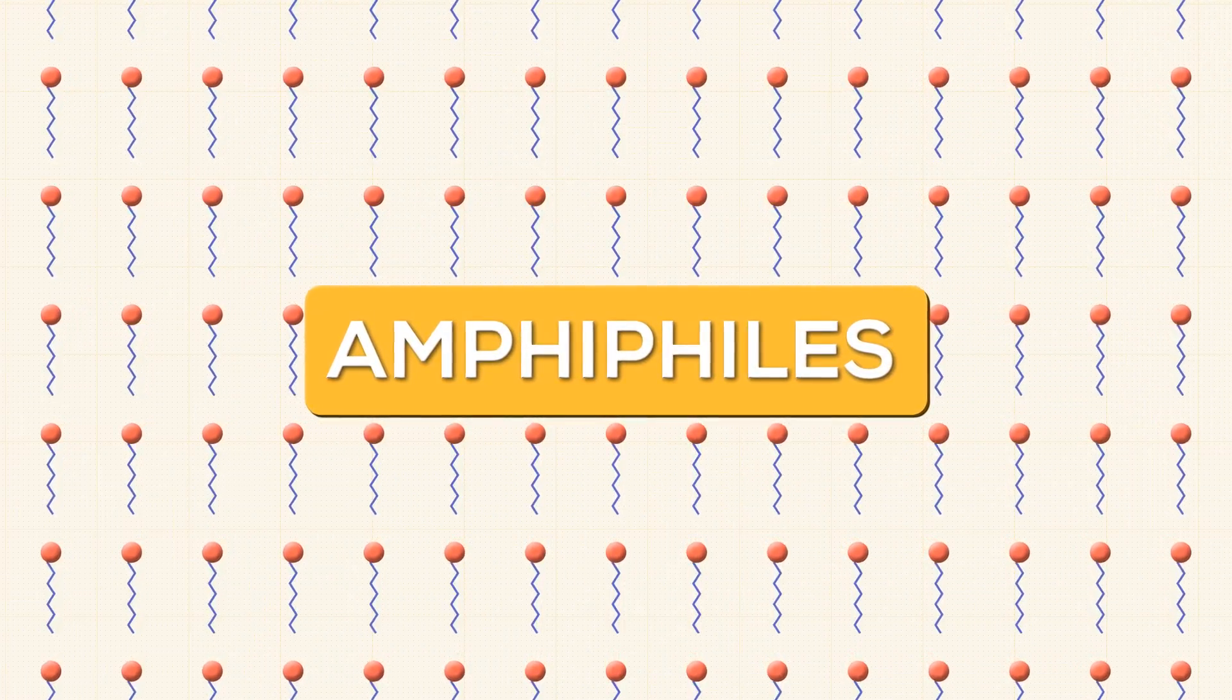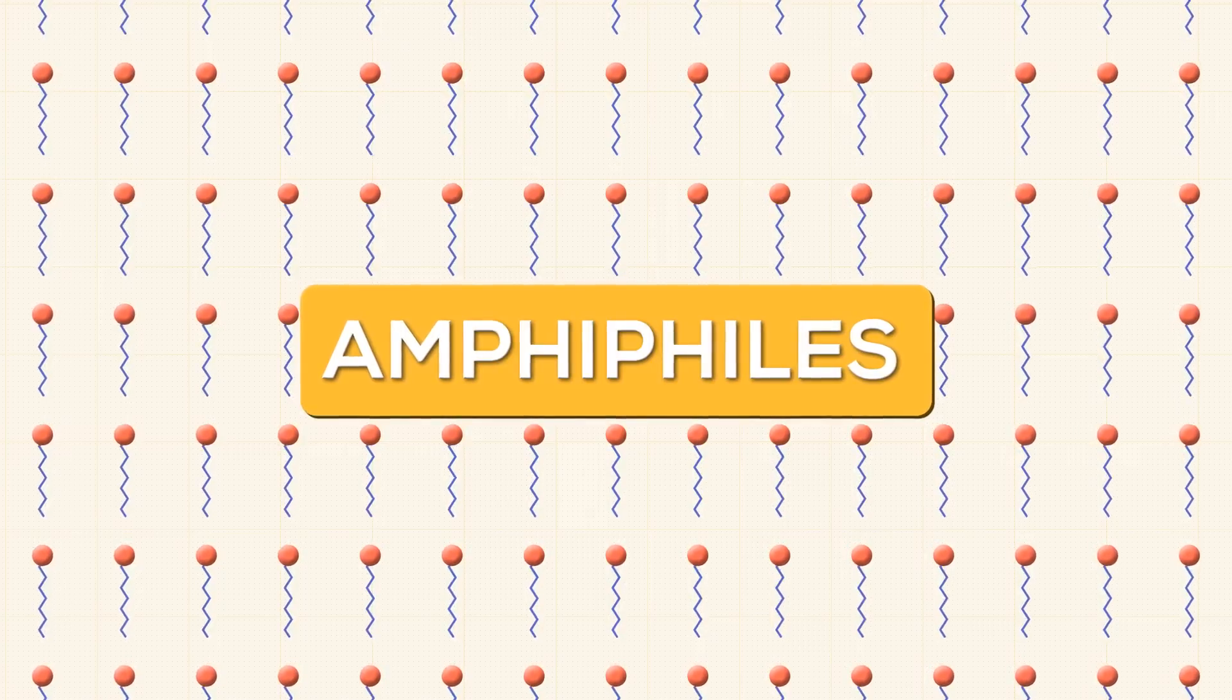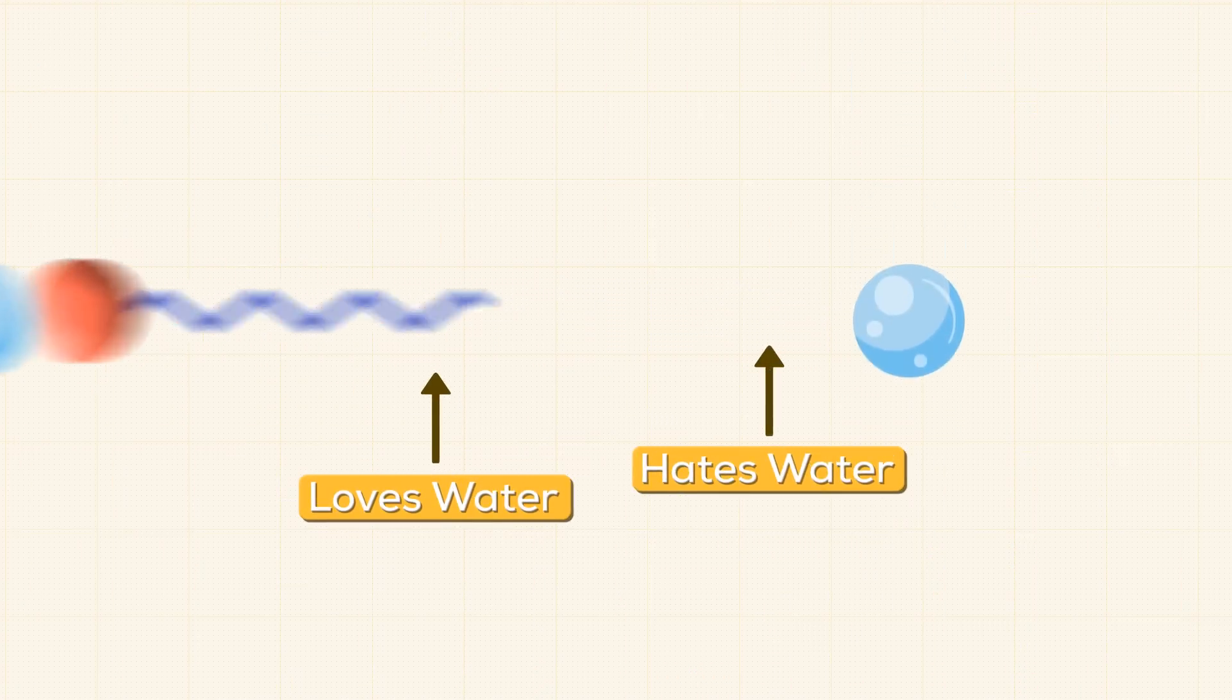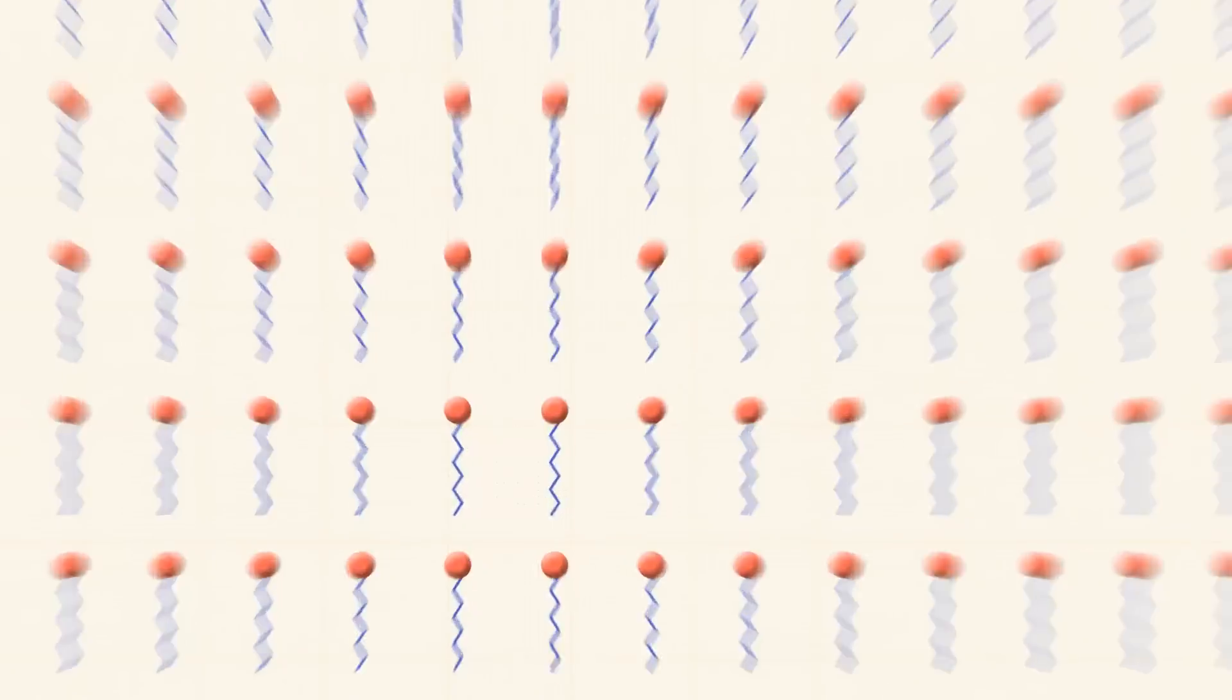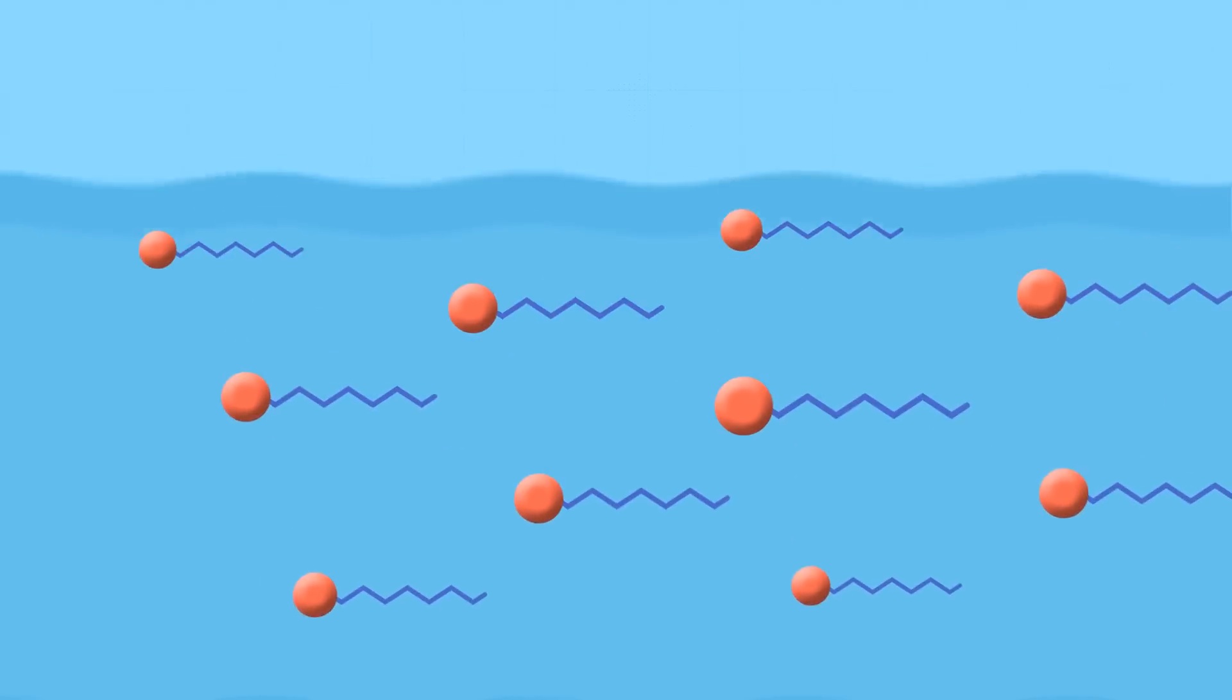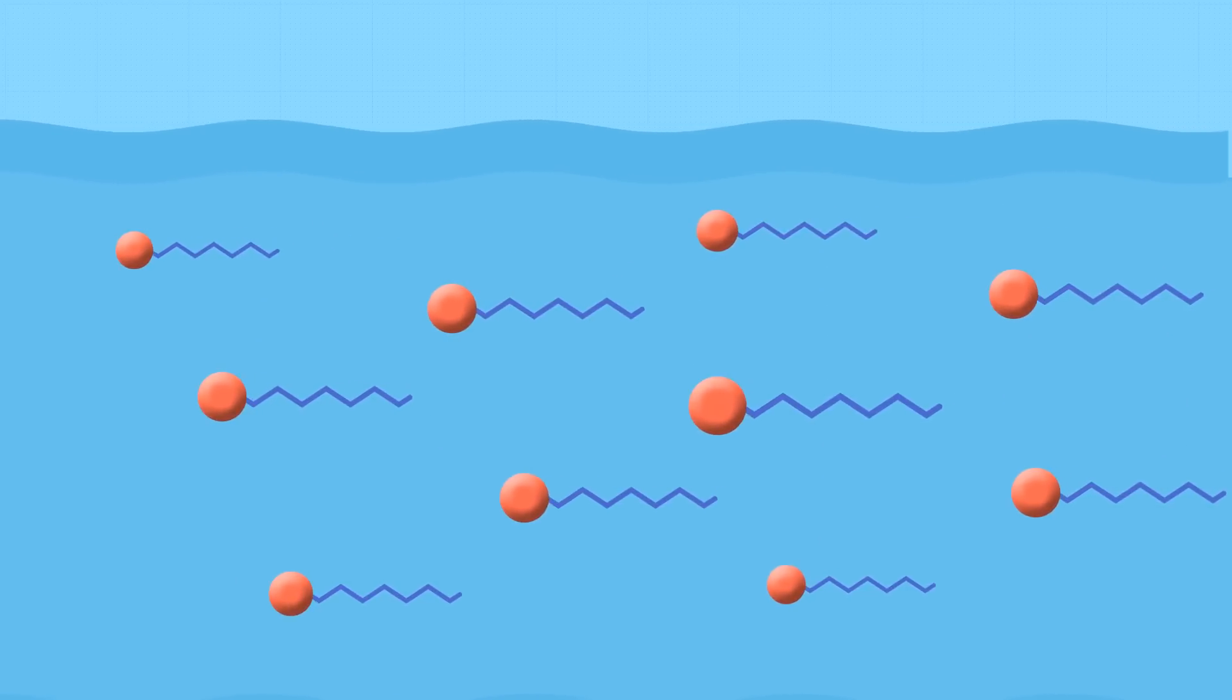Now the interesting fact is soap molecules, called amphiphiles, also have similar structure like the fat layer on viruses. They too have heads that bond with water and tails which avoid it. One drop of soap is enough to kill microbes and viruses.